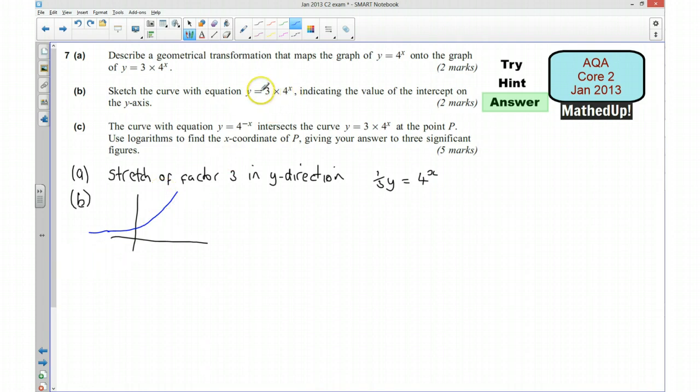And also, when x is 0, then the value of this will be 1, and so the value of all of this is going to be 3. So that tells me that it passes through the y-axis at a value of 3.